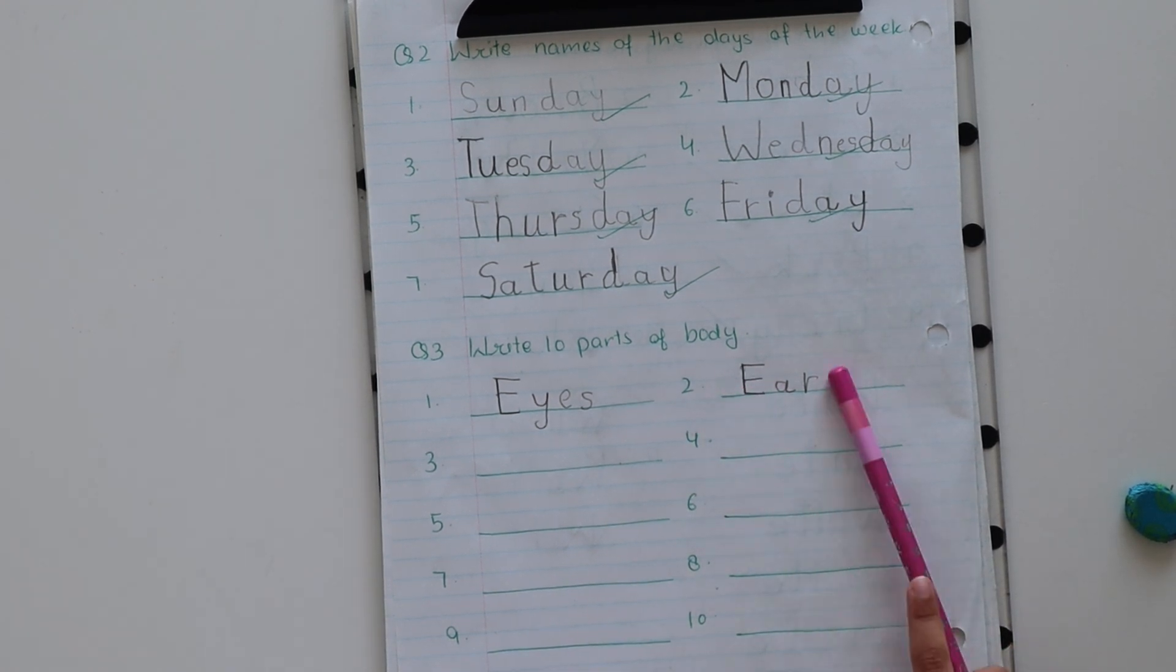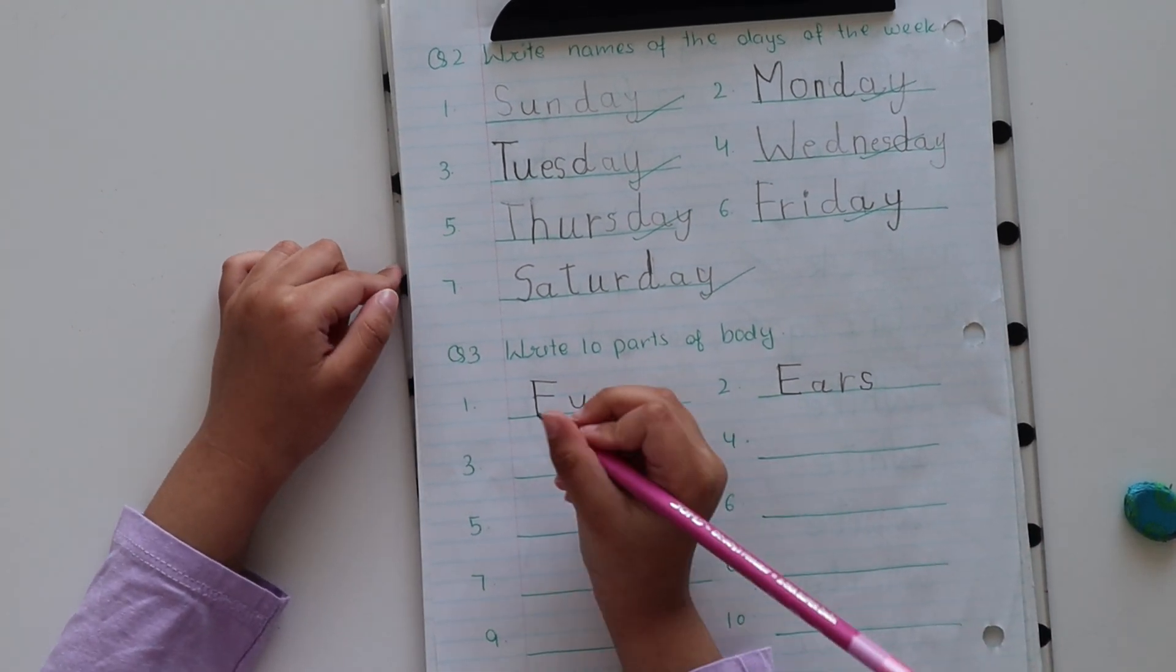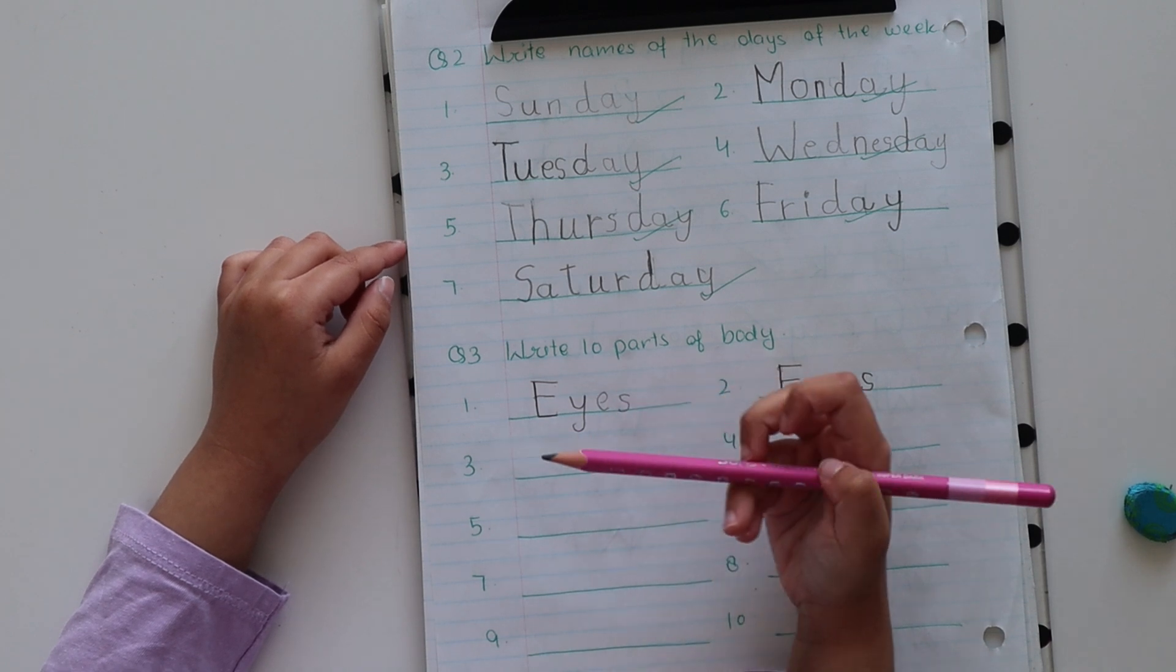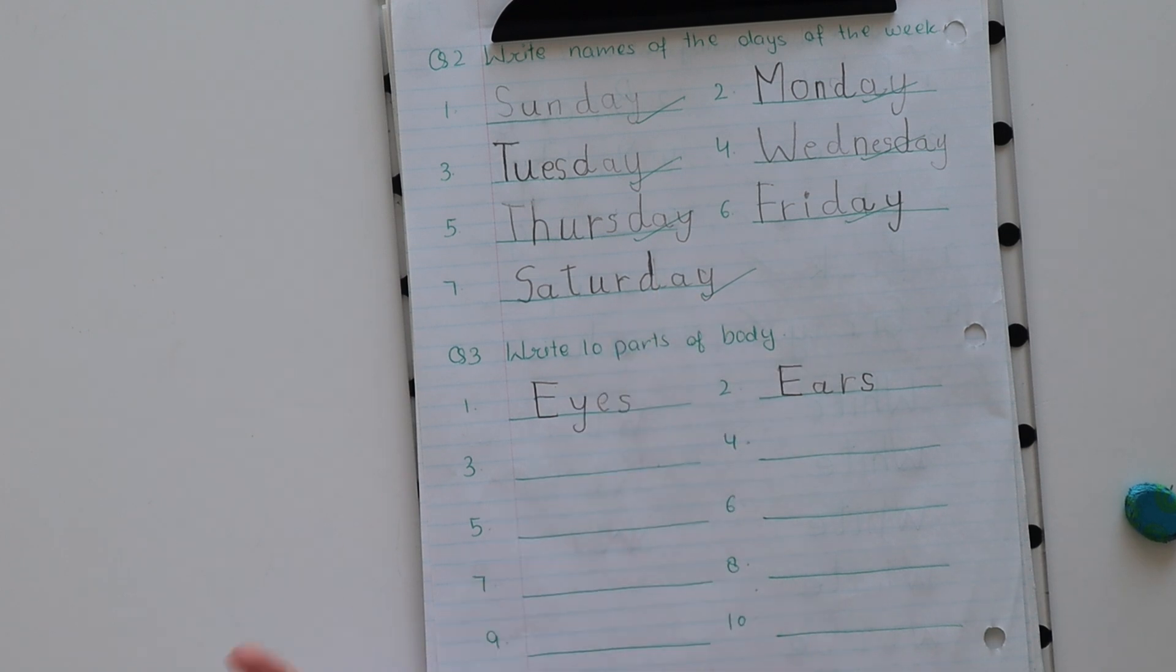Two ears. Let's write S. Now we write hand, fingers.